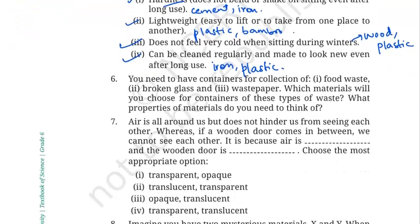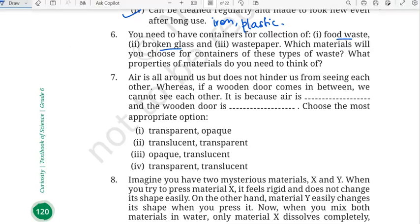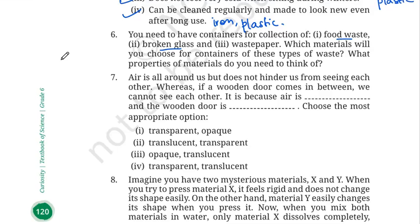Now question number six: you need containers for the following collection of waste. For food waste, we need something durable and easy to clean, so we can use plastic or metal containers. You cannot use paper containers for food waste.